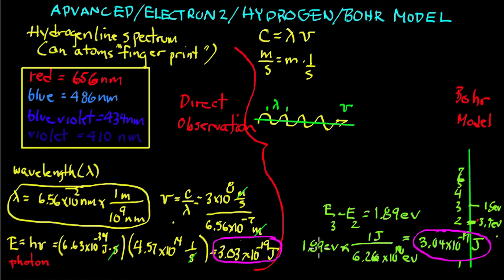If you take those 1.89 electron volts and multiply it by this conversion factor right here - 1 joule is equal to 6.26 times 10 to the 18 electron volts - you get 3.04 times 10 to the minus 19.